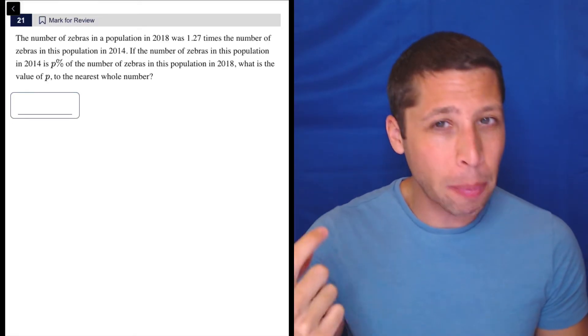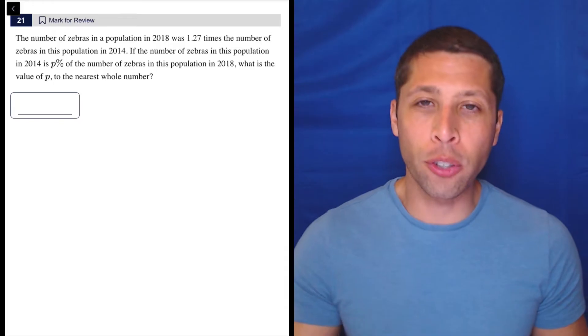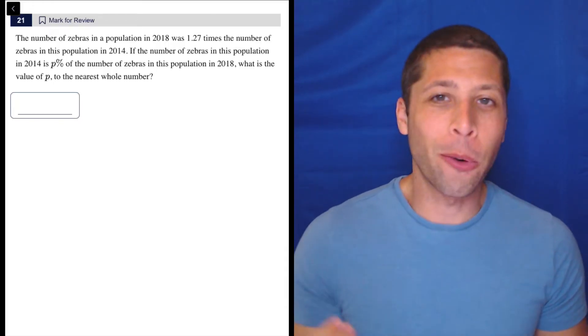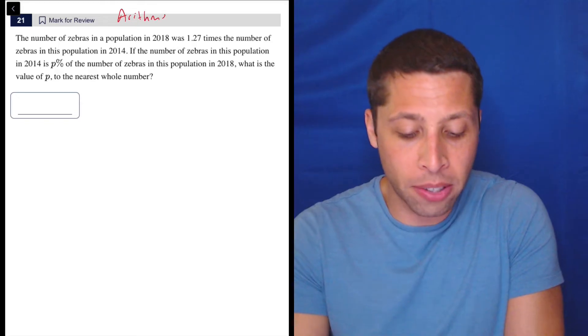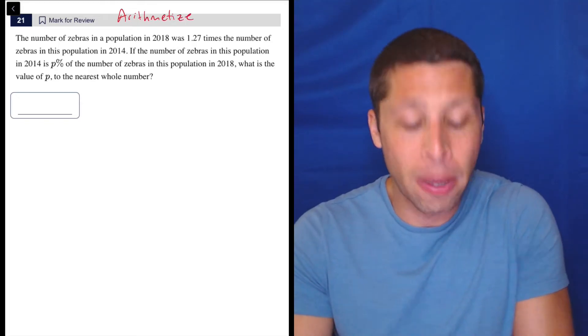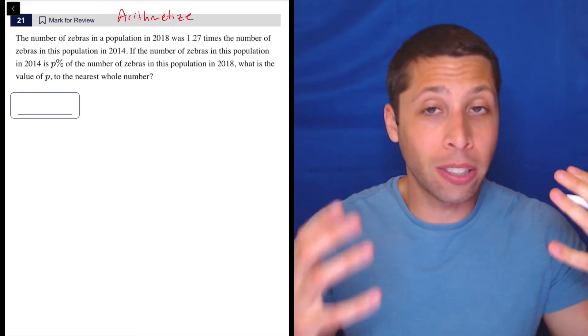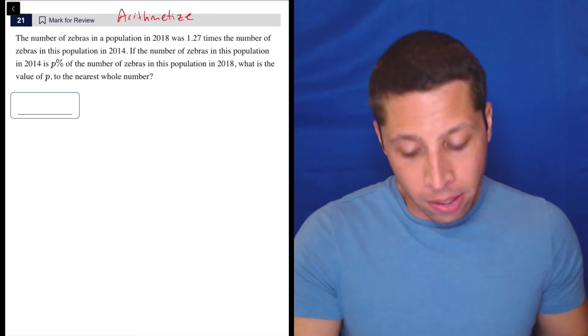They're asking about percentages, they're asking us to think about them, but they never really give us any numbers to take percentages of. So when this happens, we've got to arithmetize. Basically, we've got to make up a number of zebras so we can understand what's happening to them in a more logical, just natural way. So let's take a look.